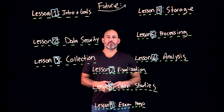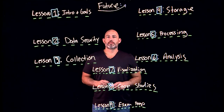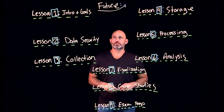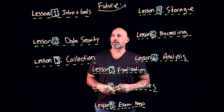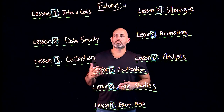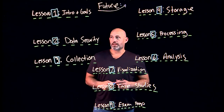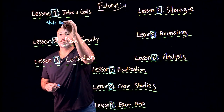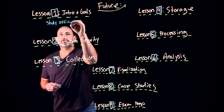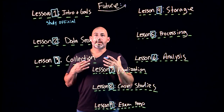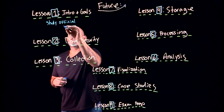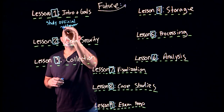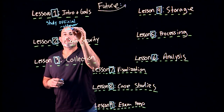Welcome to the course summary. We've covered a lot of exciting material, so let's break it down step by step. In lesson one, we talked about the introduction, the material, and the goals of the course. You should go through and study all of the official material from AWS — the official guides, white papers, diagrams, and videos available from AWS Training — as these will all help you be successful on the exam.